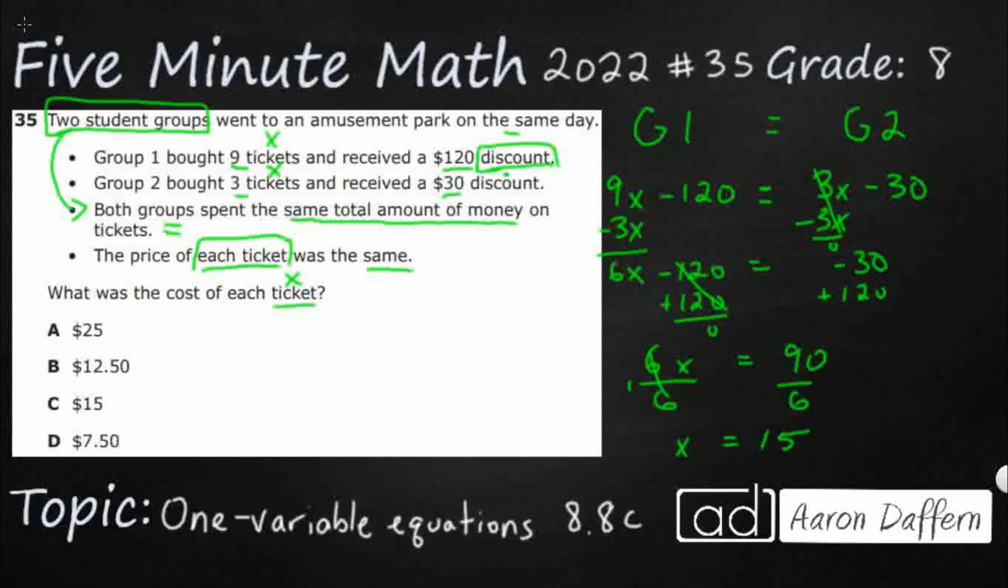So there we go. $15 a ticket. If we wanted to, we can plug this back in and we could make sure it works. But it does because we've done this correctly. So our answer X equals 15 is going to be C.